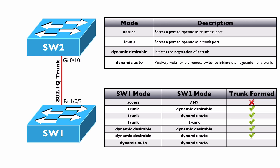And finally, dynamic auto on both sides — a trunk will not be formed, because even though both sides are willing to become a trunk, they're only willing to if the other side initiates the negotiation. It reminds me of when my wife and I are trying to decide where to go out and eat. I'll say where do you want to go eat? Oh, I don't know, where do you want to go? I pick last time, why don't you pick? Neither one of us suggests a restaurant and as a result we don't go anywhere. Same thing here — nobody is initiating the negotiation. They're both willing to become a trunk, but nobody is suggesting it, and as a result a trunk is not going to be formed.